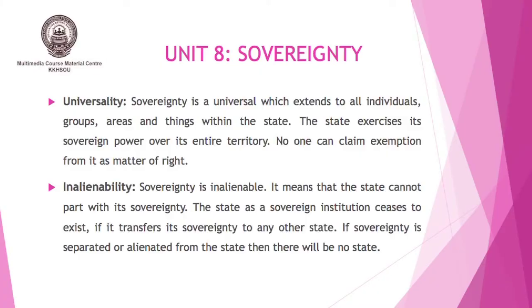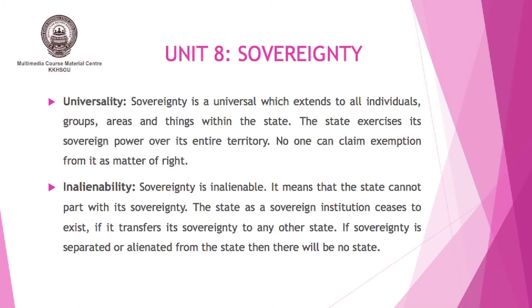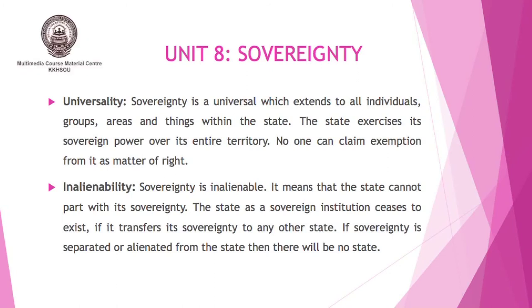Universality: sovereignty is a universal phenomenon which extends to all individuals, groups, areas, and things within the state. As we all know, sovereignty covers all aspects within the state, which may include organizations, associations, individuals, and others. The state exercises its sovereign power over its entire territory. No one can claim exception from it as a matter of right.